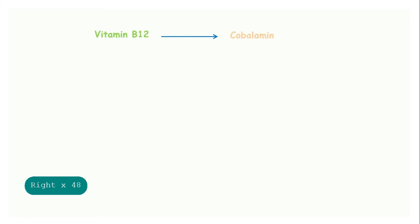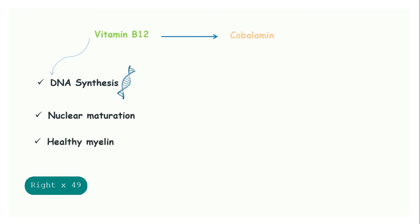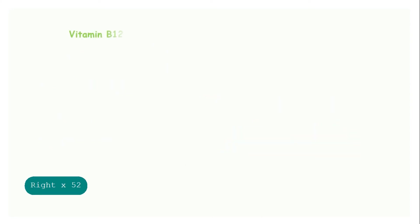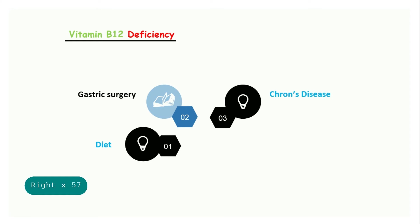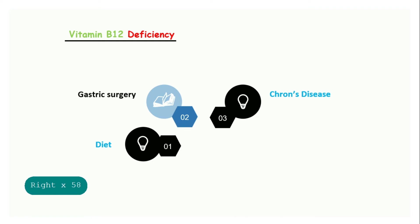Another cause of megaloblastic anemia is vitamin B12 deficiency. Vitamin B12, also known as cobalamin, is essential to DNA synthesis, nuclear maturation, and healthy myelin. Vitamin B12 can be found in meat and dairy products. A deficiency of vitamin B12 can occur in several ways. Inadequate dietary intake is rare but can develop in strict vegans who consume no meat or dairy products. It can also occur when patients undergo or have a history of gastric surgery. Decreased vitamin B12 absorption also occurs in conditions such as Crohn's disease, particularly in the older adult.